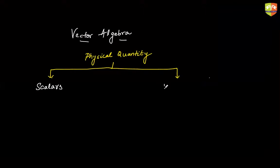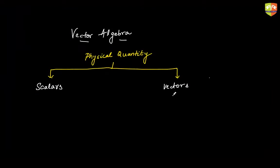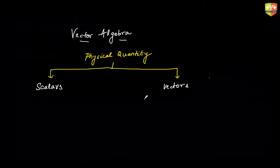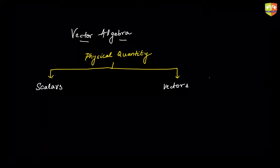There is a third quantity as well, mostly referred to as tensor quantities. Scalars and vectors themselves are tensor quantities — a scalar is a tensor of rank zero, a vector is a tensor of rank one. There is something called a dyad which is a tensor of rank two, a triad of rank three, and so on. We won't cover those as you'll study them later in your undergrad courses.